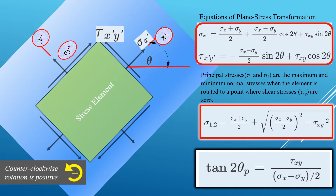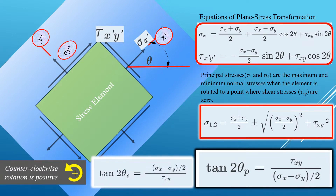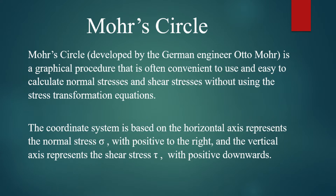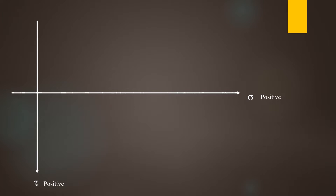We see a lot of formulas here to be calculated. However, we can use Mohr's circle, which was developed by a German engineer, Otto Mohr. It is a graphical procedure that is often convenient to use, and it's very easy to calculate normal stress and shear stresses without going through all those formulas from the previous slides. In Mohr's circle, the coordinate system is based on a horizontal axis representing normal stress sigma, positive to the right, and a vertical axis representing shear stress tau, positive downward.